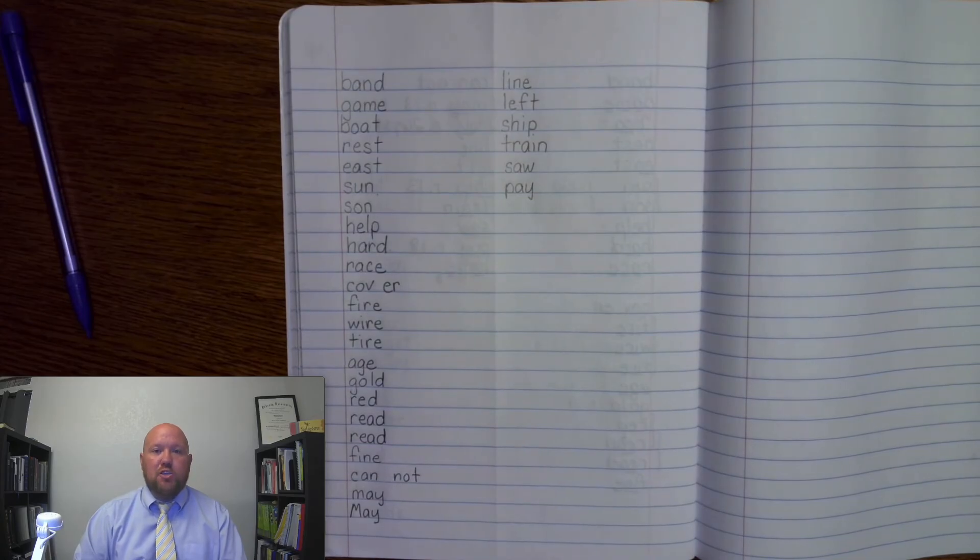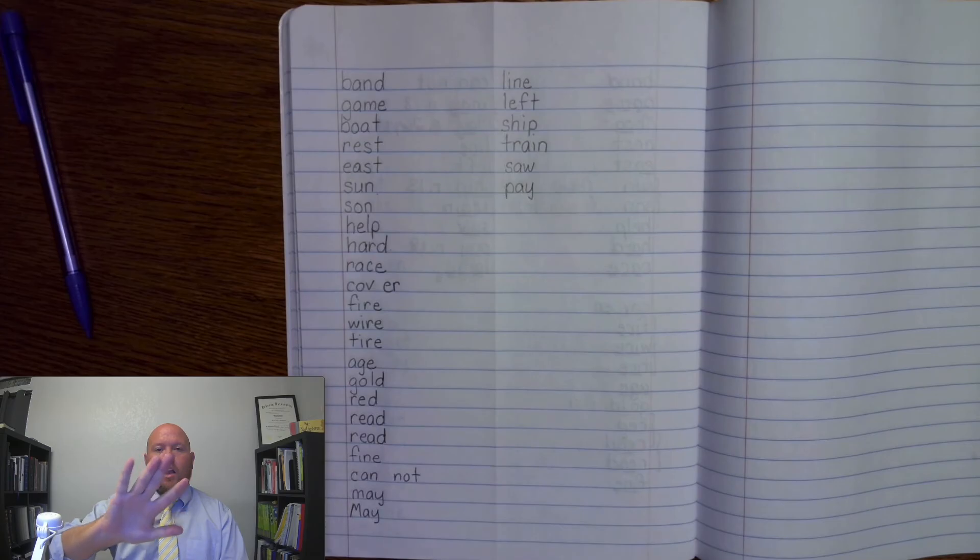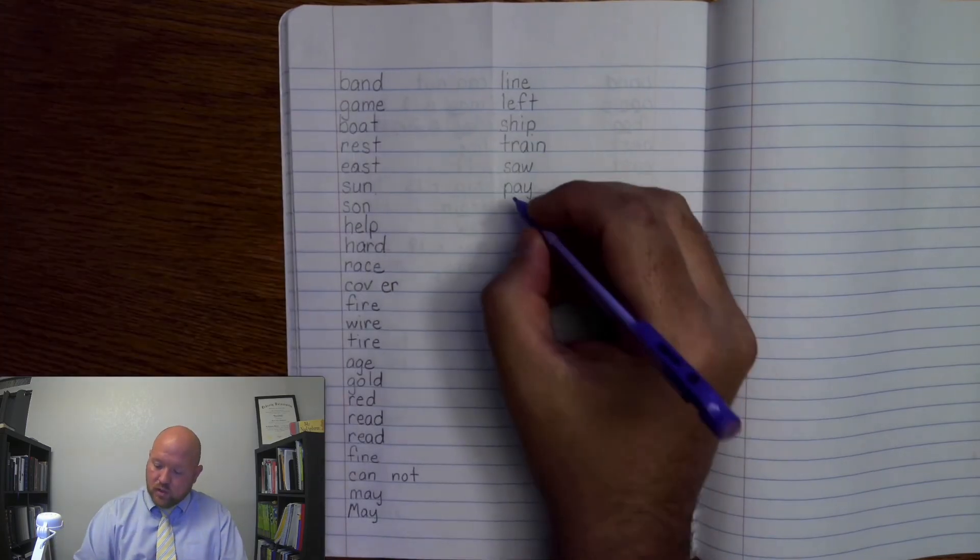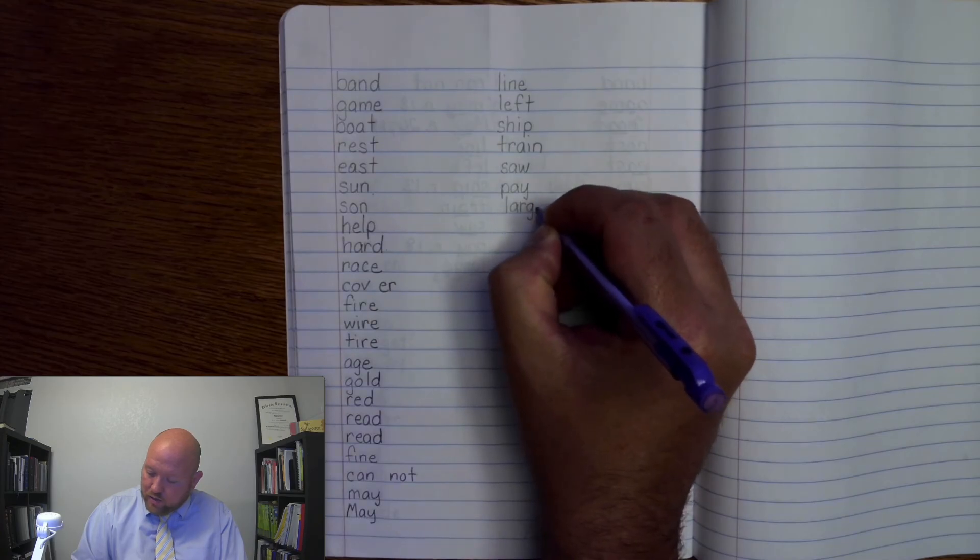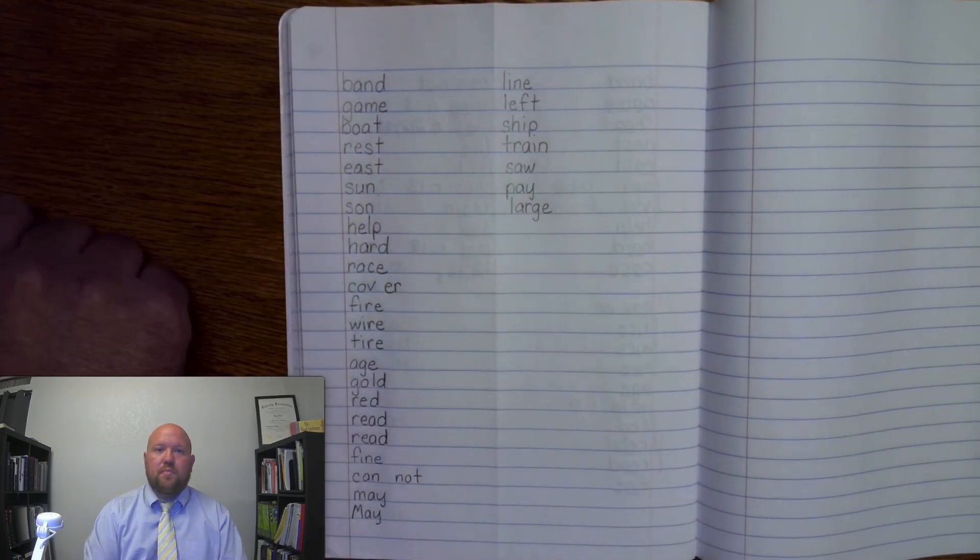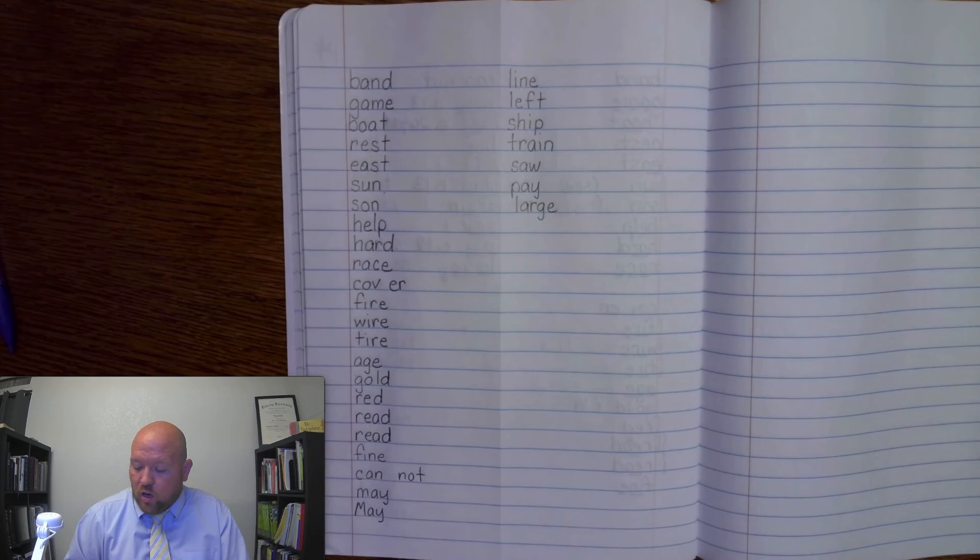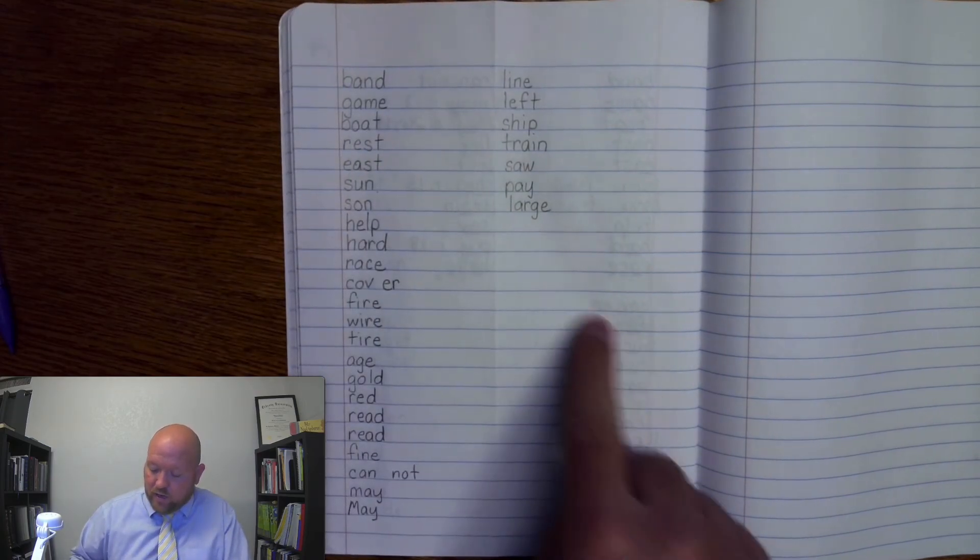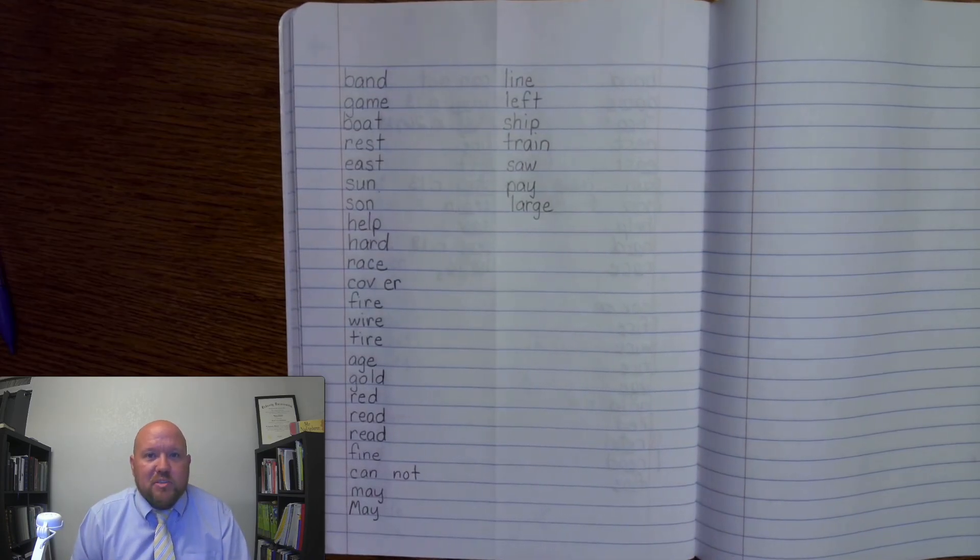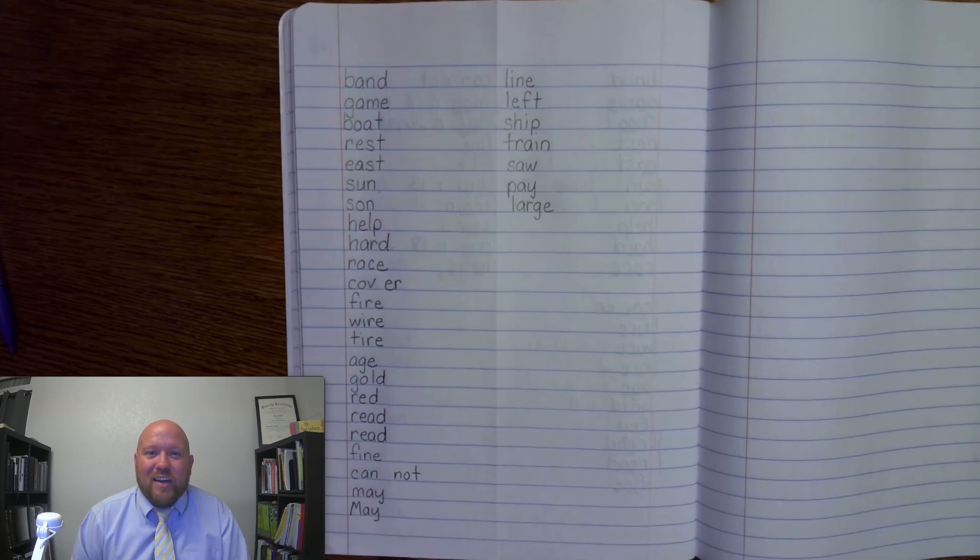And the last one. Large. L-A-R-G-E. Large. L-A-R-G-E. Large. All right. Make sure you look over them. Make sure that if you see mistakes either write a check to the side or down here where we have extra space. And make sure you spend extra time studying those for your upcoming spelling test. All right. I hope you have a great day and I look forward to see you next time. Bye.